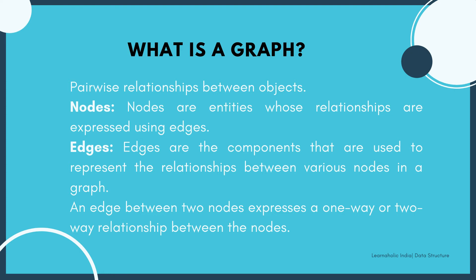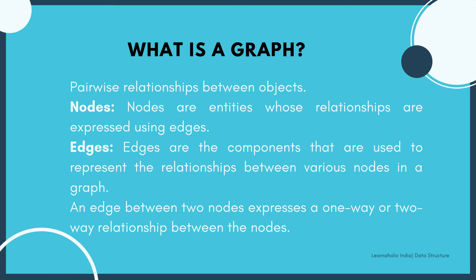The next question is: What is a graph? Graphs are mathematical structures that are used to represent pairwise relationships between objects. A graph is a flow structure that represents relationships between various objects. It can be visualized using two basic components: nodes and edges. Nodes are the most important components in any graph — they are the entities whose relationships are expressed using edges. If a graph comprises two nodes A and B and an undirected edge between them, then it expresses a bidirectional relationship. Edges are components used to represent the relationship between various nodes in a graph, expressing a one-way or two-way relationship between nodes.